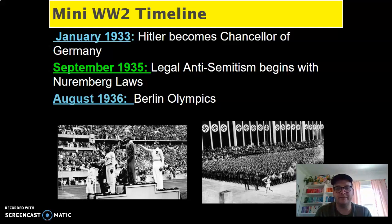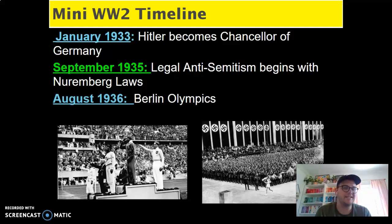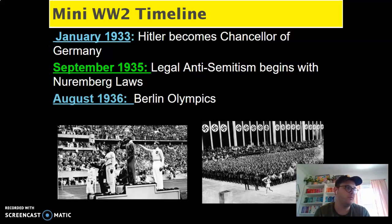In September 1935, legal anti-Semitic laws begin. They're called the Nuremberg laws. Anti-Semitism, if you guys remember, means anti-Jewish. So there are laws made in Germany that are against Jewish people — forbids them from practicing certain aspects of their religion, allows discrimination against Jews, etc.